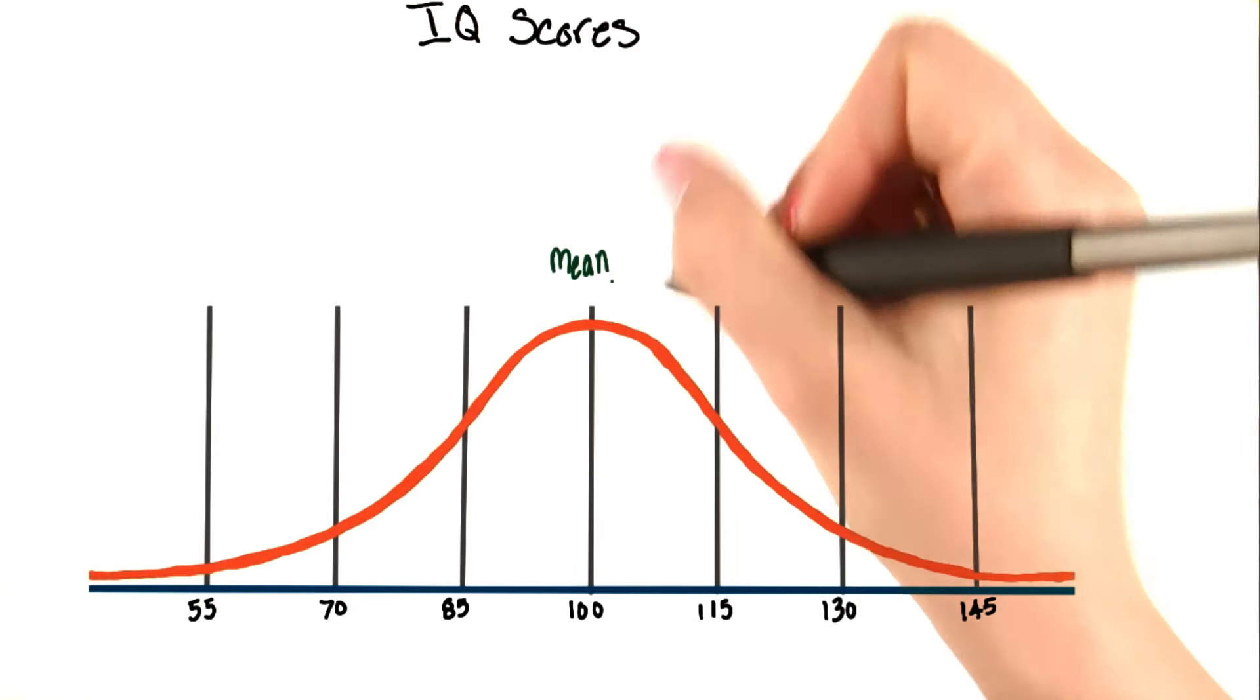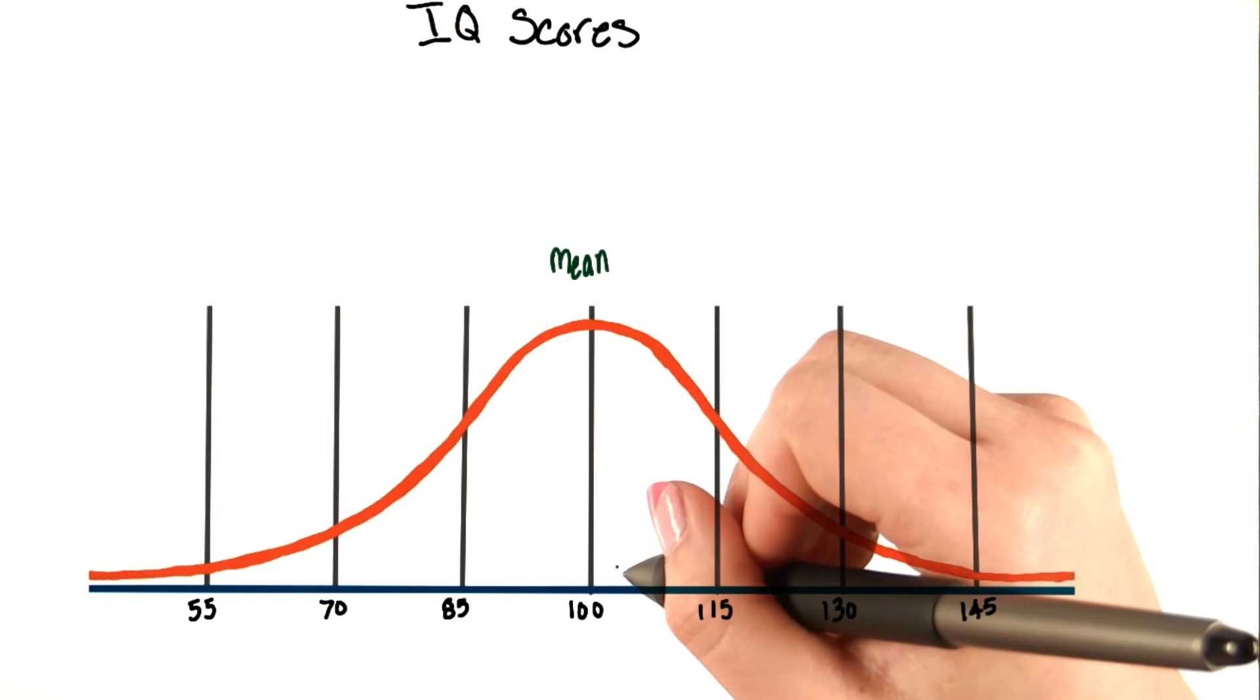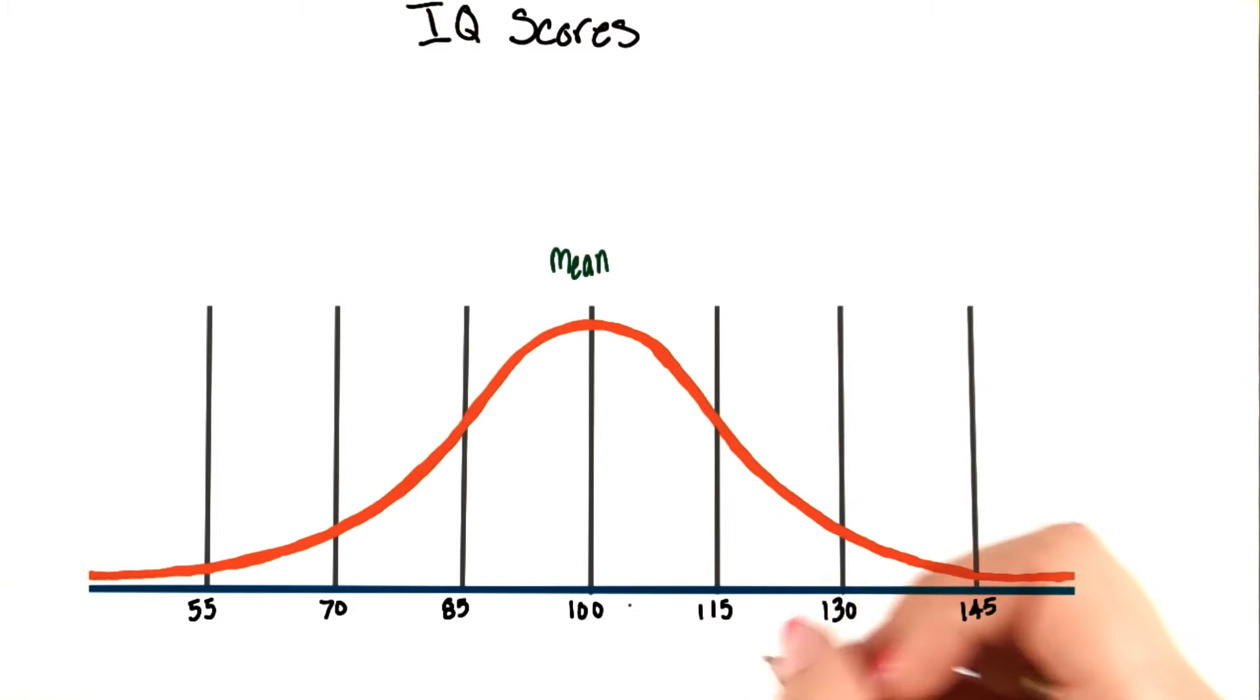IQ scores are converted to have a mean of 100. The standard variation around the mean is 15 points. This standard variation is called the standard deviation, which shows how much the score varies from the mean.